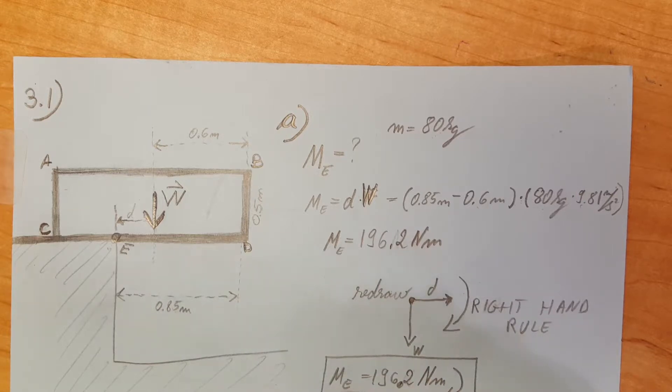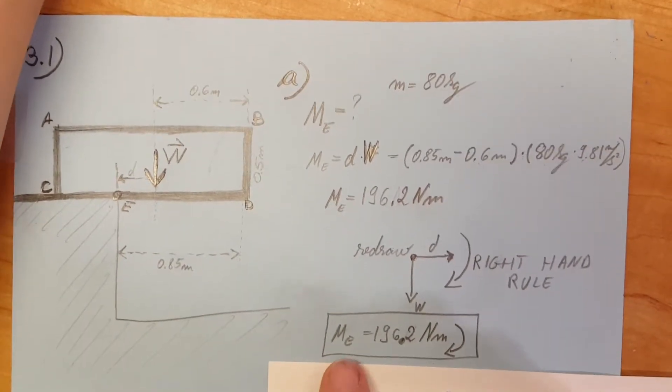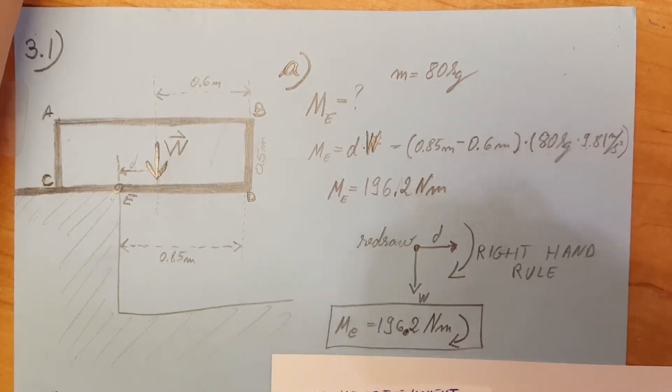And then we can write our answer. The moment about point E equals 196.2 newton meters turning this way.